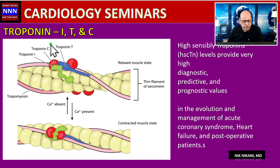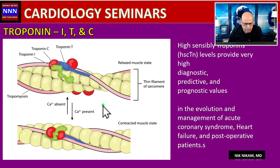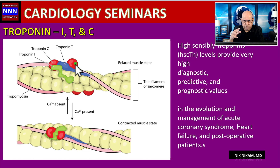Troponin is one of the components of the sarcomere of the myocardial fibers. The myocardium has actin and myosin — the myosin slides in and out of the actin strands. On the sarcomere's thin filament there are three different kinds of troponins. Troponin I is an important component of myocardial troponin. Troponin C is also found in skeletal muscle, so it is not quite useful in diagnosing myocardial injury or infarction.